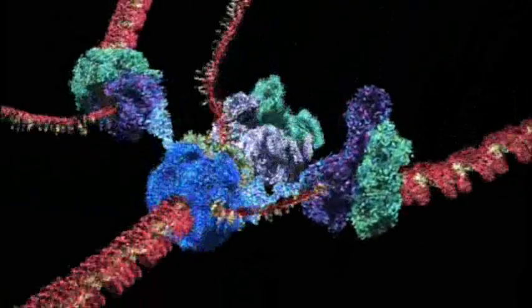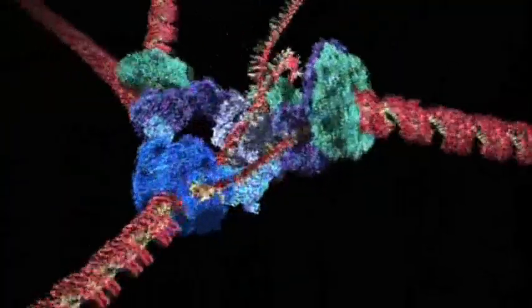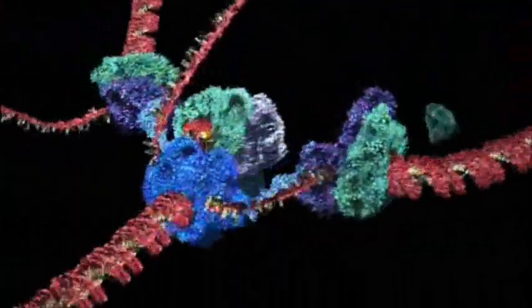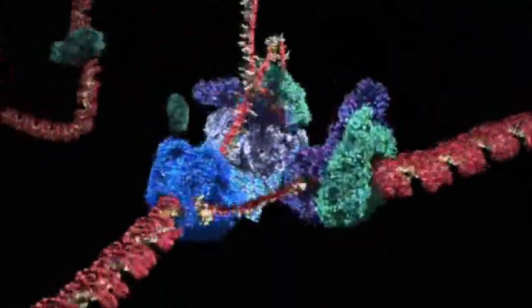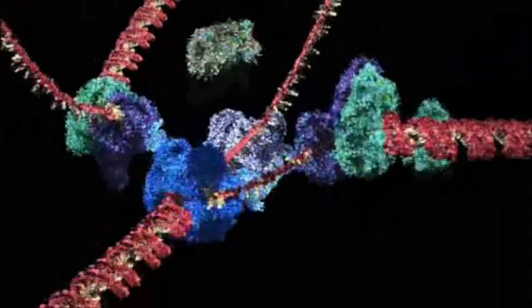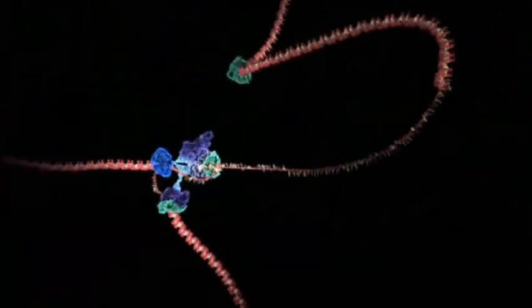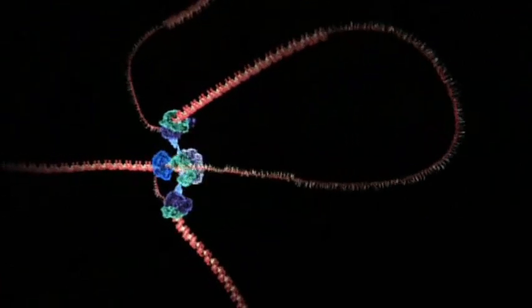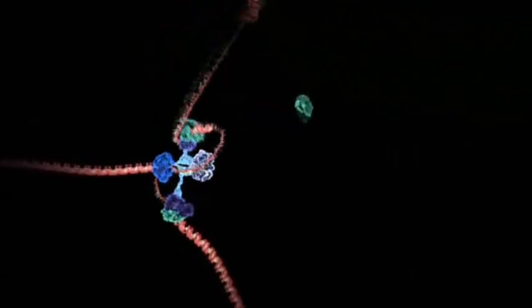One strand is copied continuously and can be seen spooling off to the right. Things are not so simple for the other strand because it must be copied backwards. It is drawn out repeatedly in loops and copied one section at a time. The end result is two new DNA molecules.